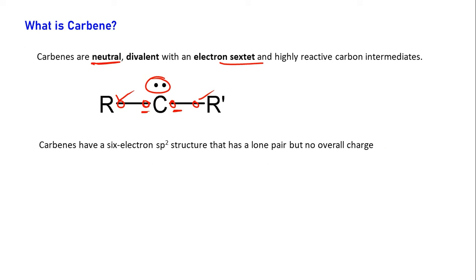Carbene has a 6-electron sp2 structure — surrounding carbon there will be a total of 6 electrons. The hybridization of the carbene carbon is sp2, meaning 1s and 2p orbitals hybridize to make 3 sp2 orbitals, and 1 p orbital remains as a pure unhybridized p orbital. Carbene also has a lone pair but has no overall charge, so it is neutral.